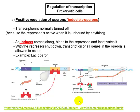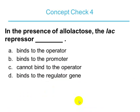Think of it like a math problem: the negative of a negative gives you a positive. The allolactose induces the inactivation of the repressor — a double negative. So: in the presence of allolactose, what is the lac repressor doing? Without allolactose, the repressor binds to the operator. With allolactose, it does the opposite.